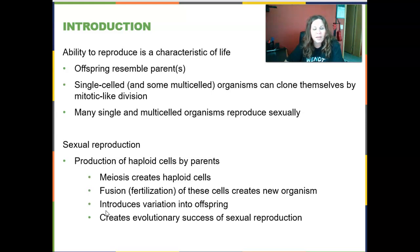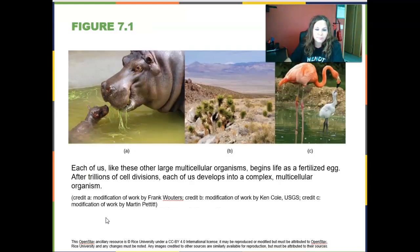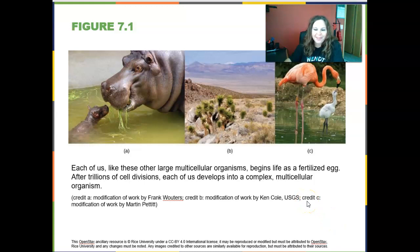This variation is actually an evolutionary success, because it helps ensure the survival of the species. Each of us, like other large multicellular organisms, begins life as a fertilized egg — a small microscopic cell that can divide many, many times through trillions of cell divisions, developing into a complex multicellular organism.